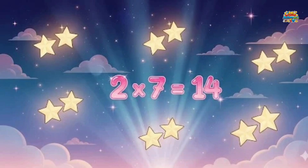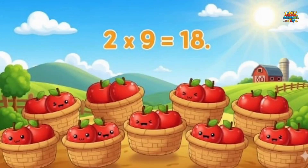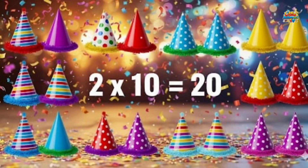Two times seven equals fourteen. Seven pairs of shining stars make fourteen stars. Two times eight equals sixteen. Eight wheels on four bicycles make sixteen wheels. Two times nine equals eighteen. Nine baskets with two apples each make eighteen apples. Two times ten equals twenty. Ten party hats, two on each head, make twenty hats.